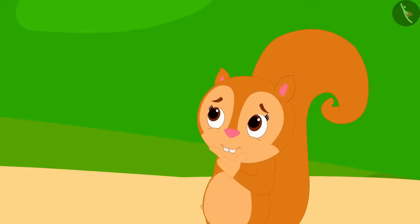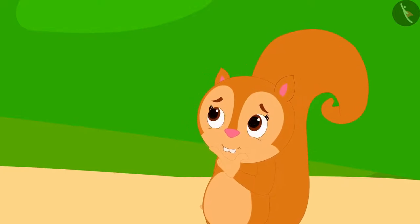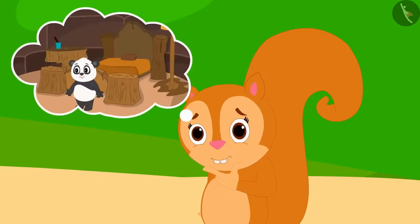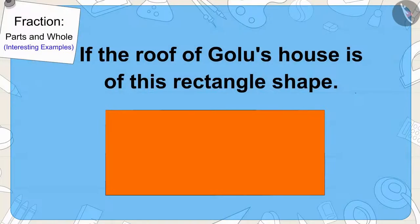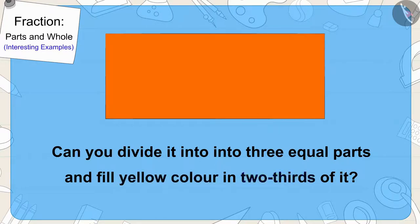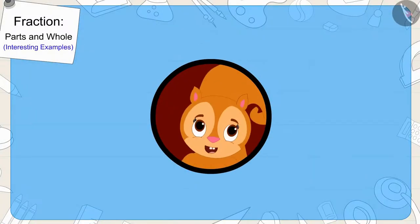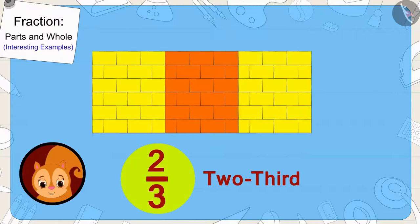Chanda started wondering where she had seen such a roof before. Then she remembered that she had seen such a roof over her friend Golu Panda's house. Chanda immediately reached Golu's house. If the roof of Golu's house is of this shape, can you divide it into three equal parts and fill yellow color in two-thirds of it? You can find the answer by pausing the video. Well done, children! In this way, we can fill yellow color in two-thirds of the roof.